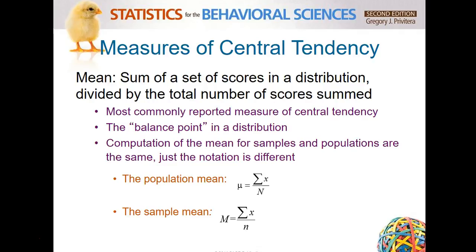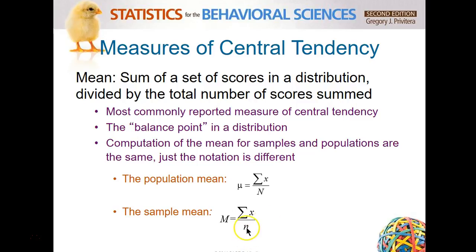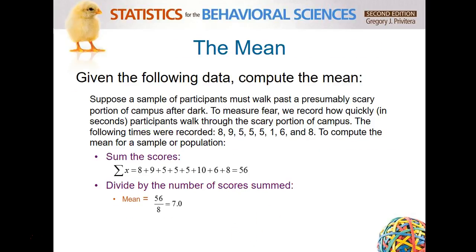The mean is the sum of a set of scores in a distribution divided by the total number of scores. The population mean is designated by the Greek symbol mu, and the sample mean is designated by x-bar. The sigma symbol — that funny-looking E — is the symbol for sum, and X represents the scores. You add up all the scores and divide by your population total or sample total to get your mean.